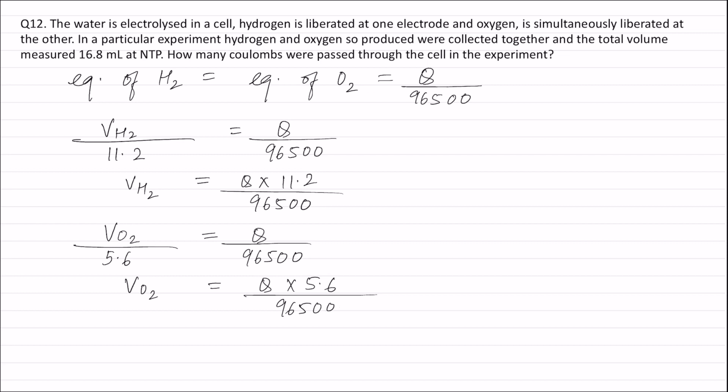Now in the question, the total volume of hydrogen and oxygen is given as 16.8 milliliters, or 16.8 divided by 1000 liters. That is, volume of hydrogen plus volume of oxygen is equal to 16.8 divided by 1000 liters, and this is also equal to Q into 11.2 divided by 96,500 plus Q into 5.6 divided by 96,500.